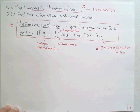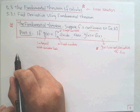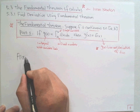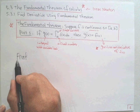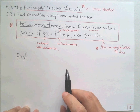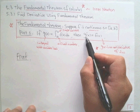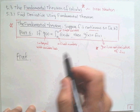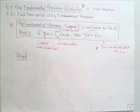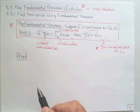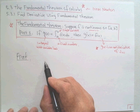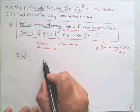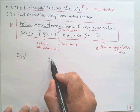I will give you a rough proof for this theorem. This theorem tells us how to define antiderivative functions. For the rough proof, we need to find the derivative, so we use the definition of derivative. We look at what g(x) is.